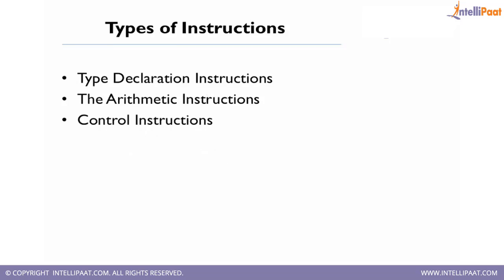Let's begin with types of instructions in C. We have basically three types: type declaration instructions, arithmetic instructions, and control instructions. Declaration instructions are used during variable declaration. Arithmetic instructions are used for arithmetic calculations. Control instructions are used while doing logical operations where we need to compare two things and take action based on whether the output is true or false.